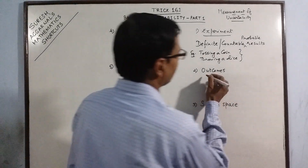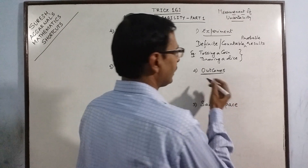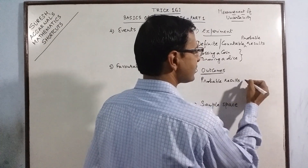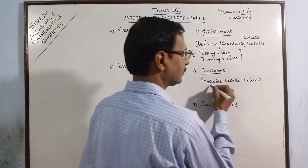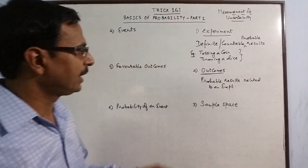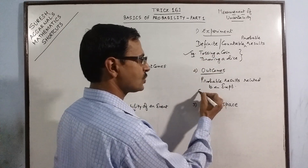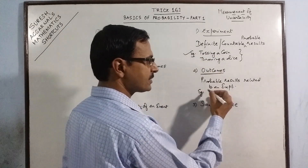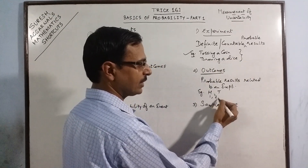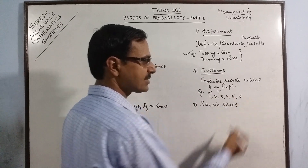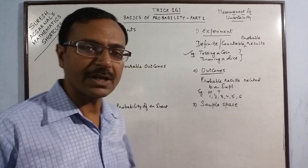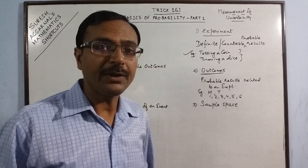So what are outcomes? The probable results related to an experiment are called outcomes. Like in the example of tossing a coin, the outcomes are head and tail. For throwing a dice, the outcomes are 1, 2, 3, 4, 5, 6. So all the probable outcomes related to an experiment are technically known as outcomes.